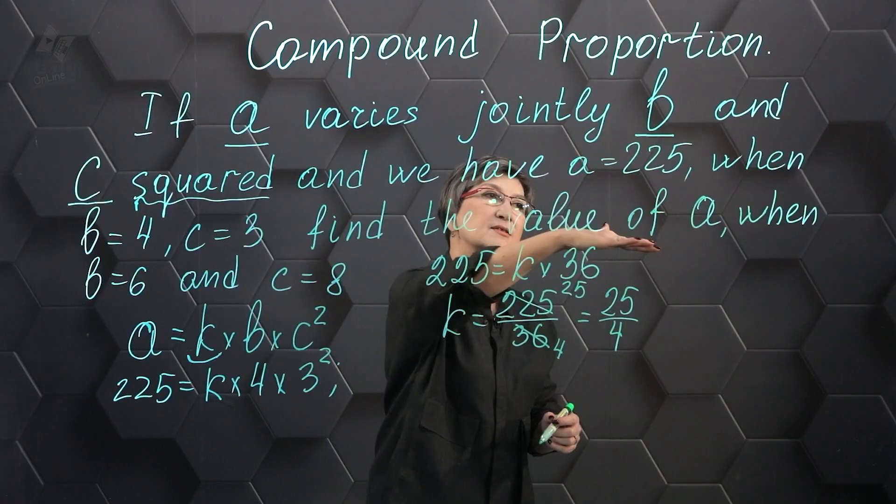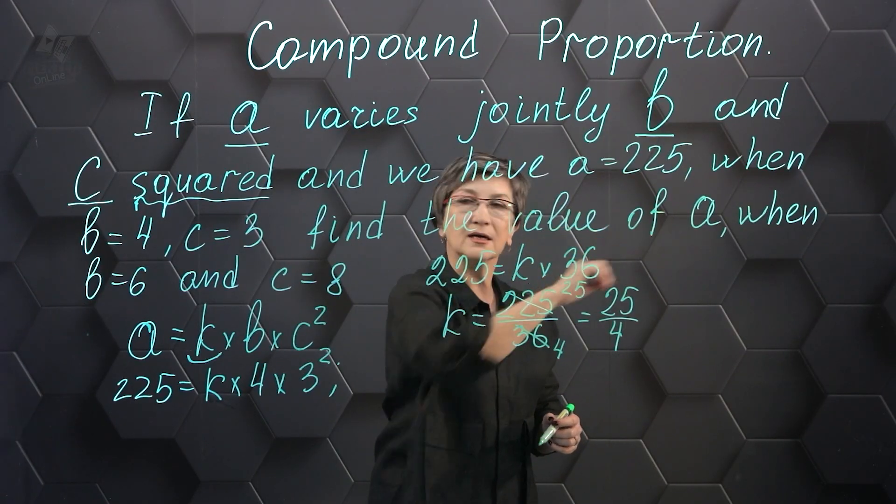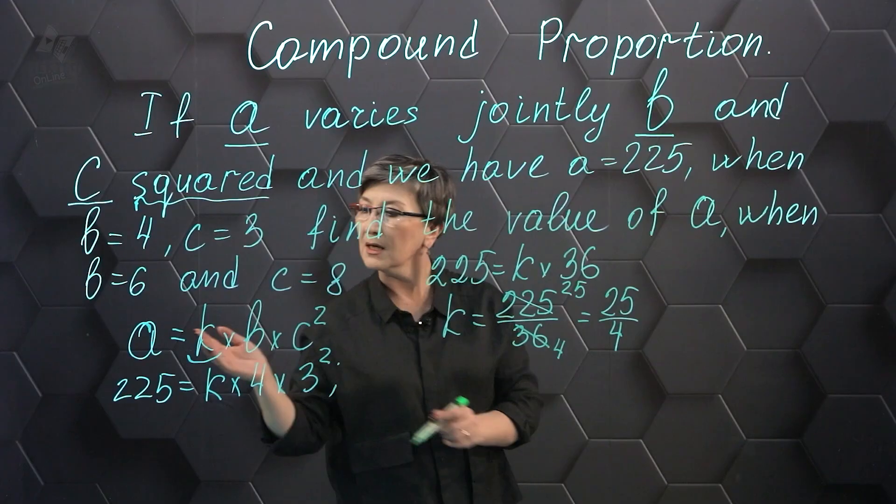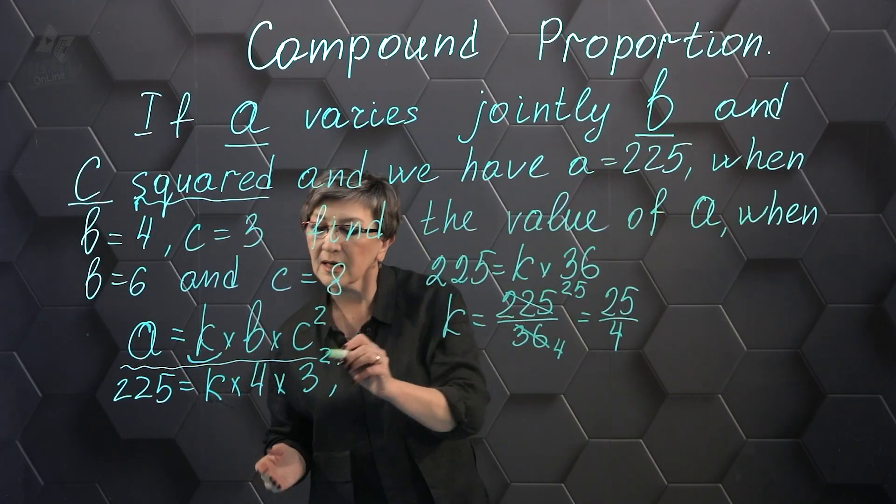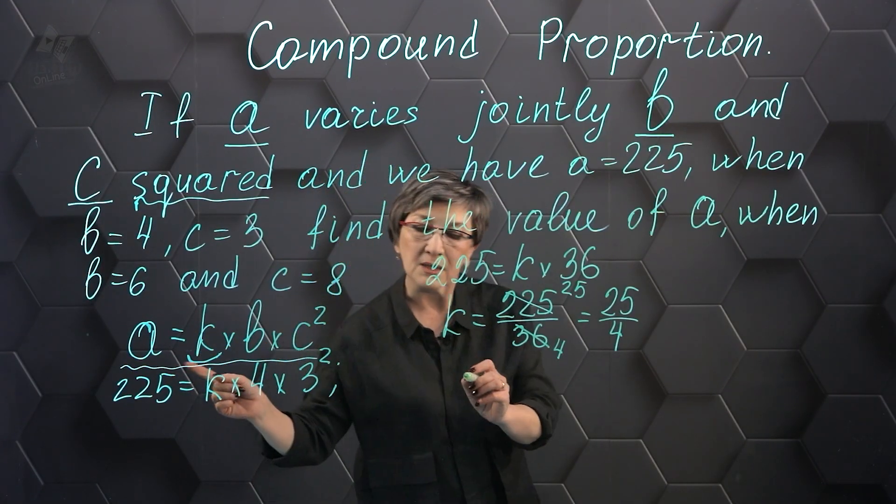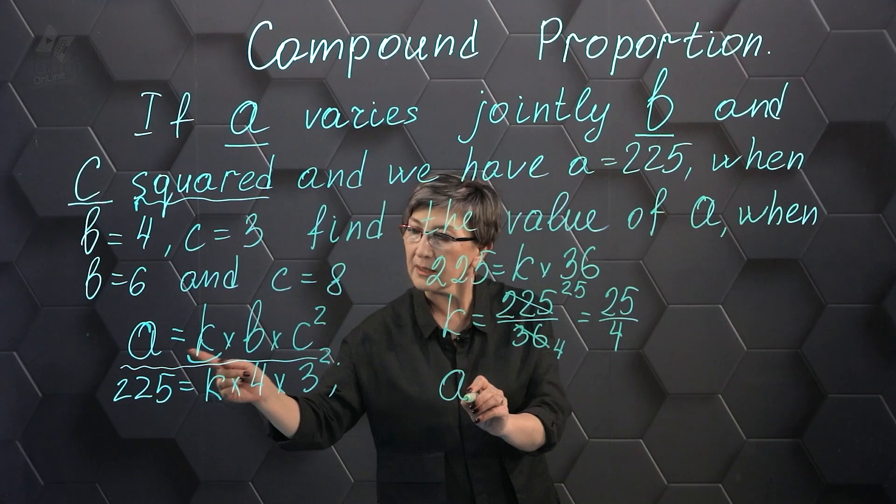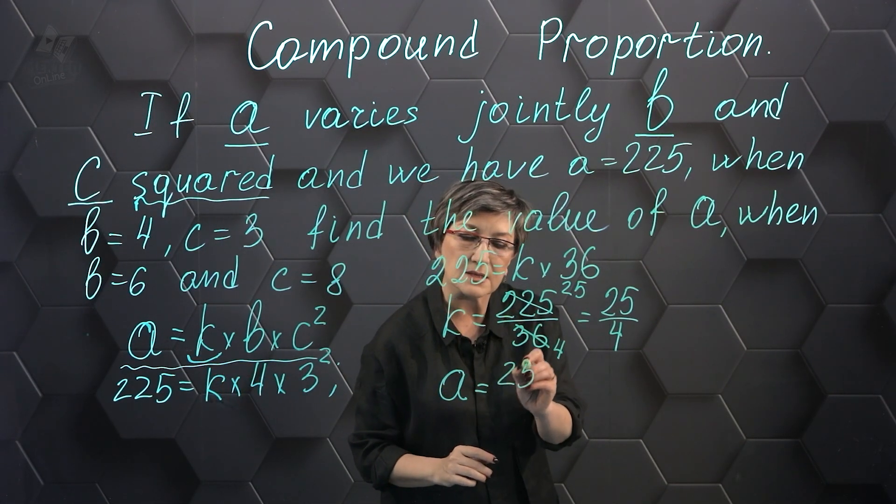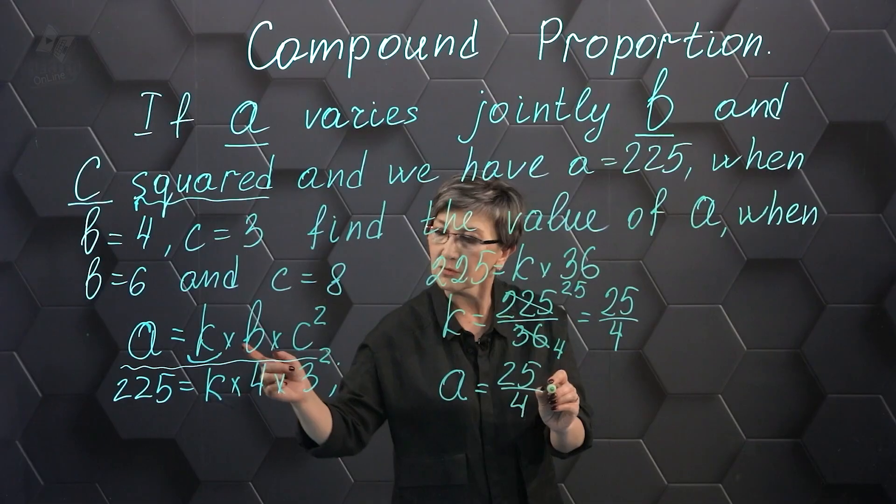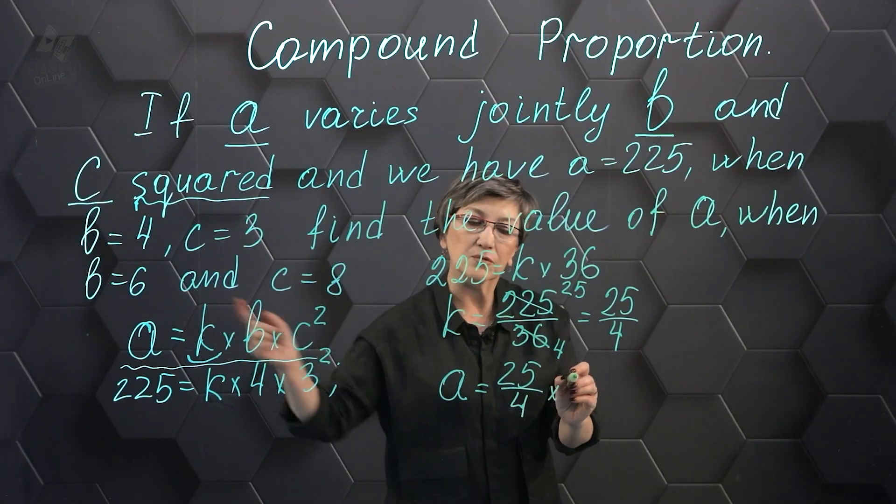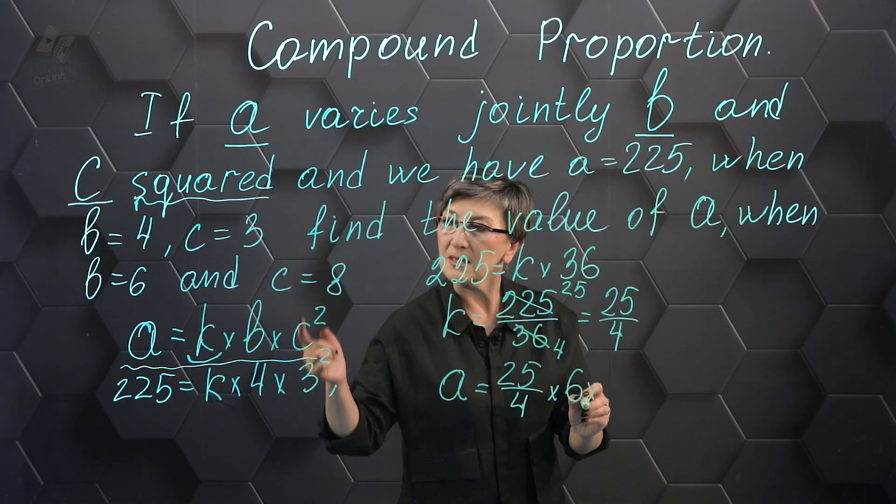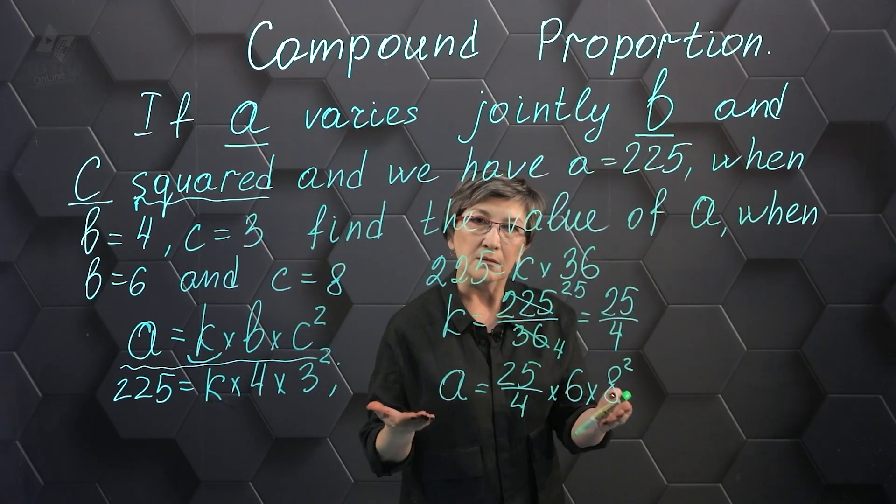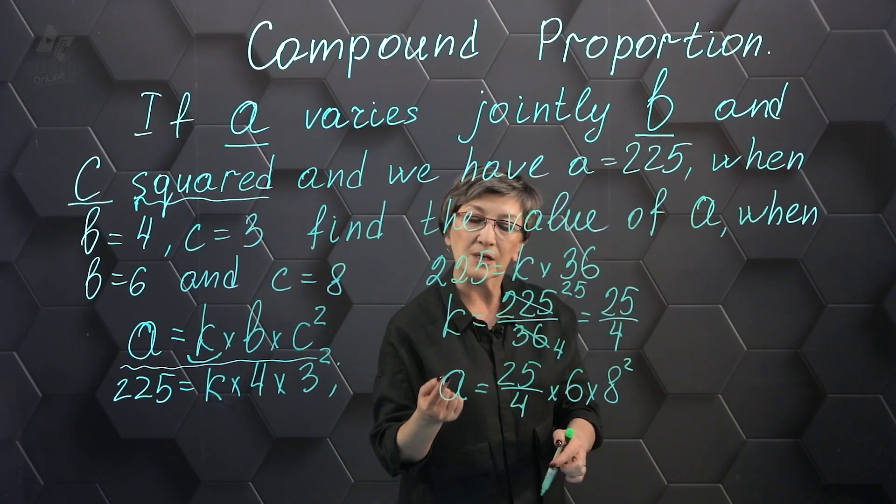We need to find the value of a when b is 6 and c is 8. Using our formula, we will find the value of a. a is equal to k, which is 25 fourths, times b equals 6, and c equals 8, 8 squared.